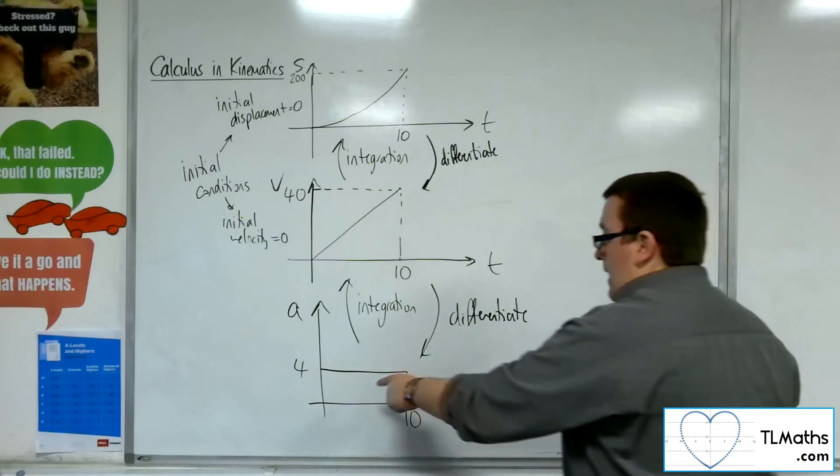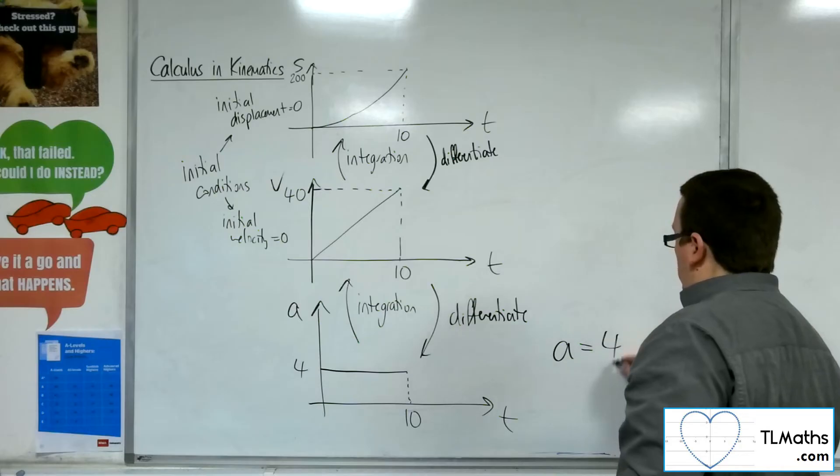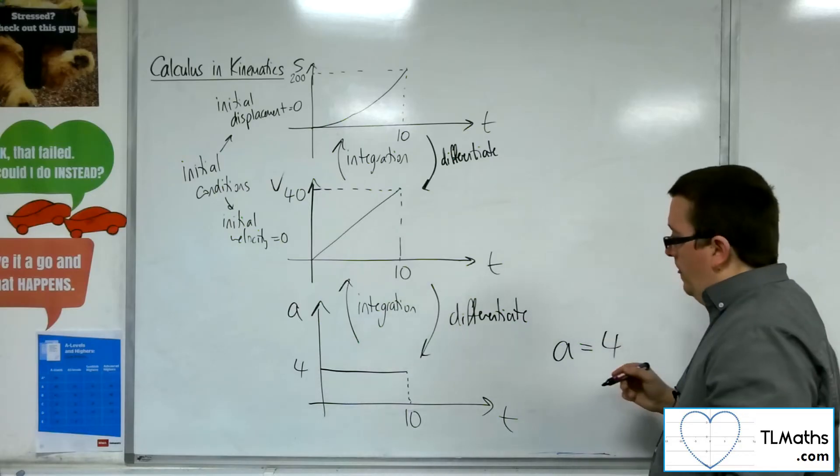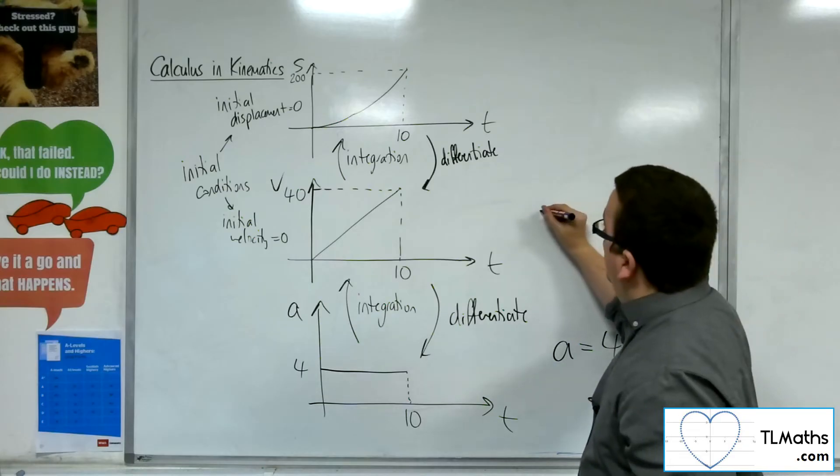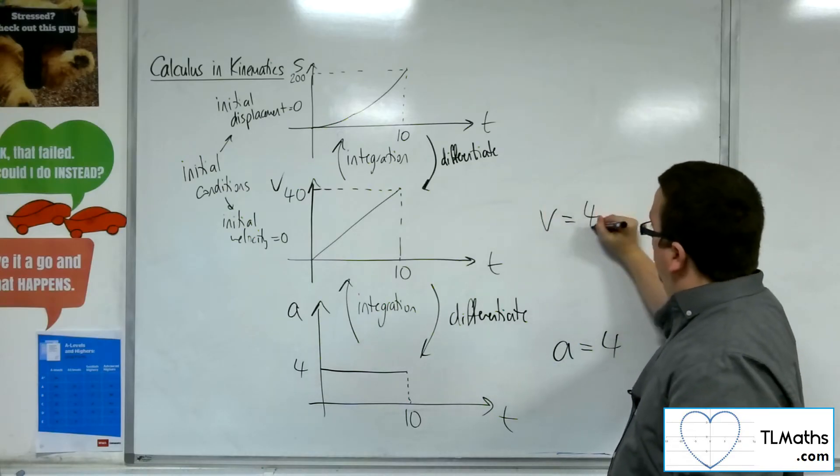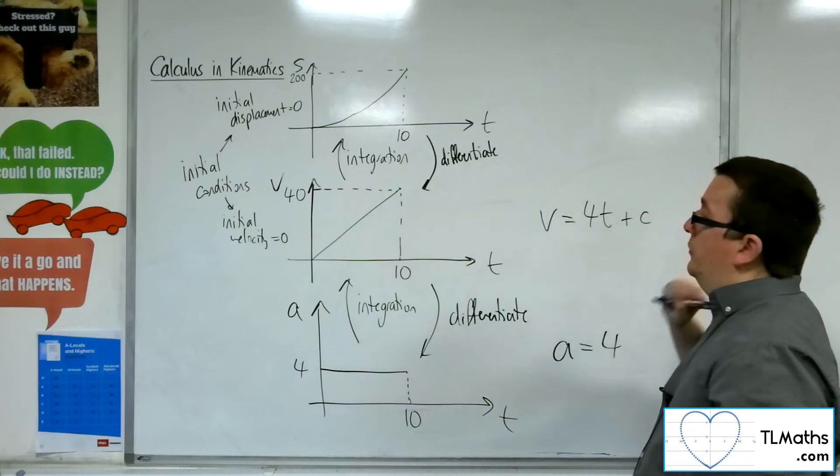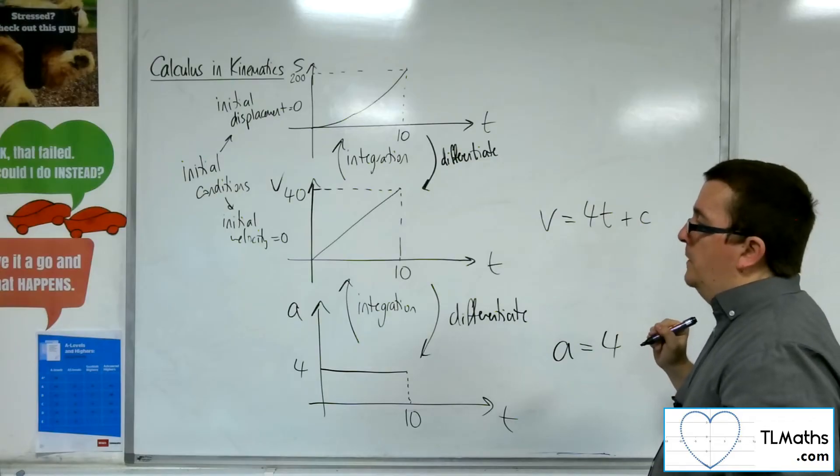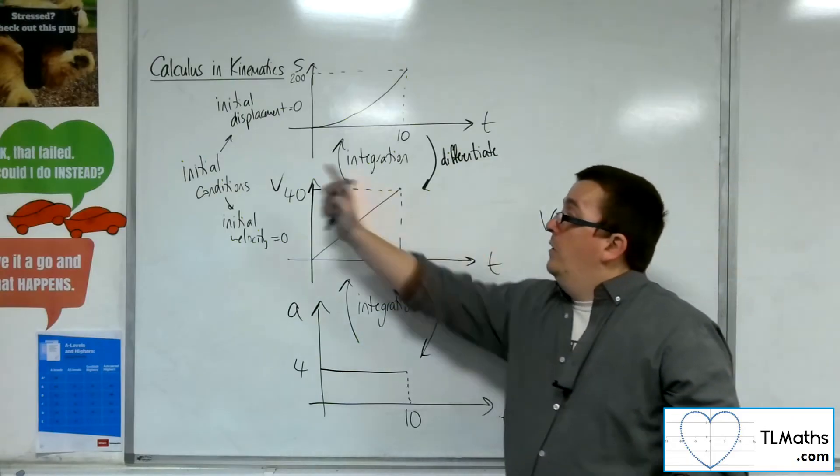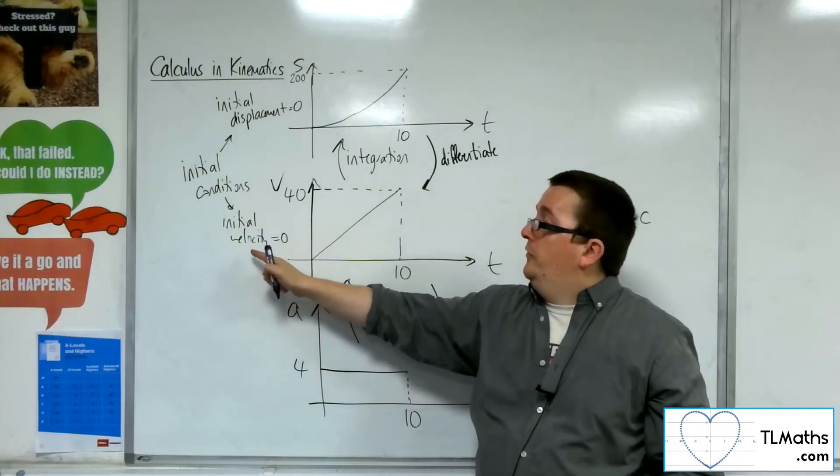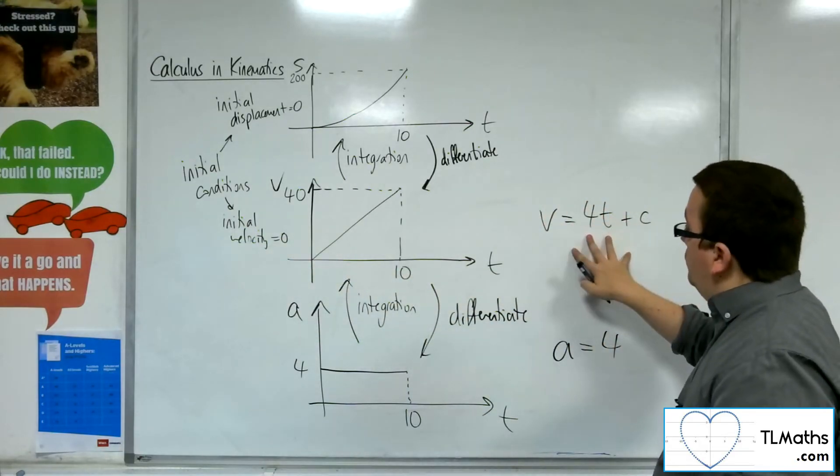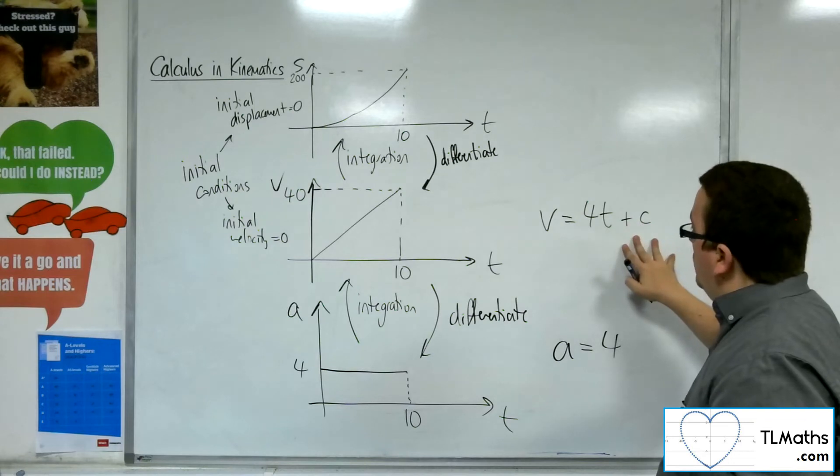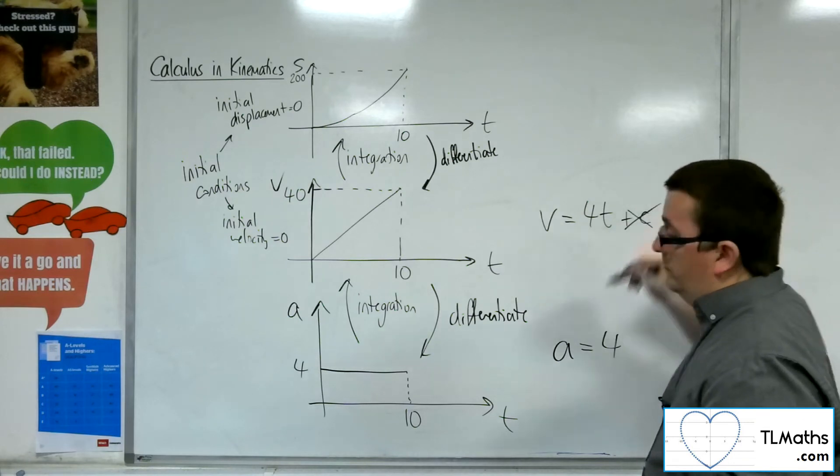So here, we've got this a equals 4. So then when I integrate, I get the velocity is 4t plus some constant c. Now, because I've got that initial condition saying that the initial velocity is 0, when t is 0, v is 0, and so c will be 0.